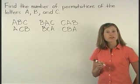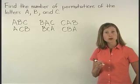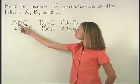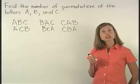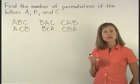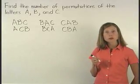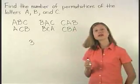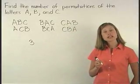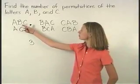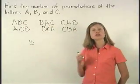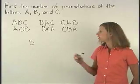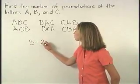There's a shortcut to find the number of permutations. Notice that there were three possible letters that we could choose for the first position in our permutation, so we have three. Next, there were two possible letters we could choose for the second position in our permutation, so we have times two.